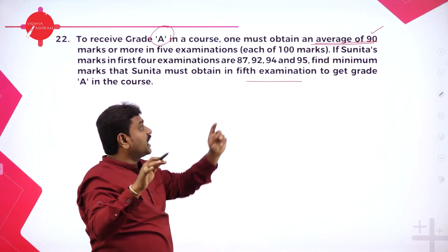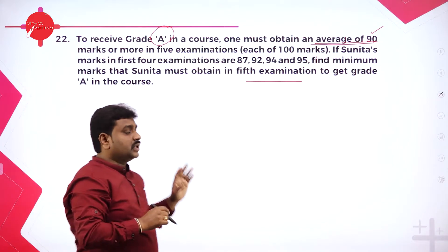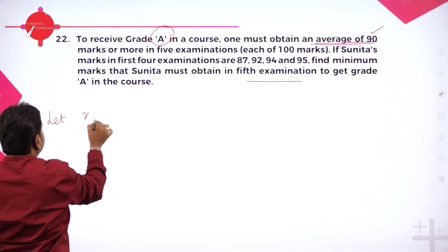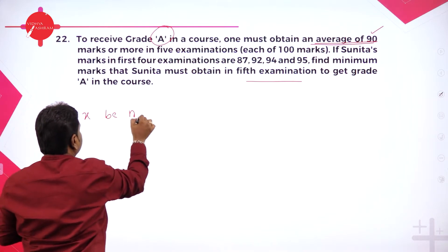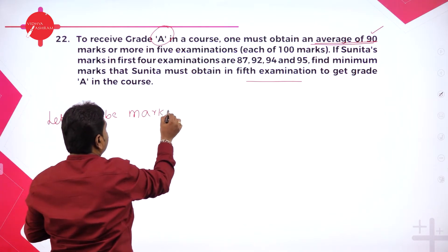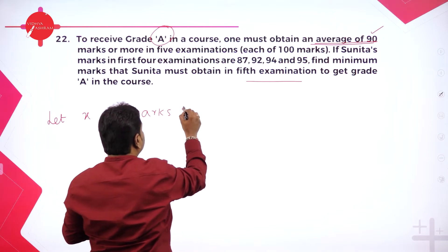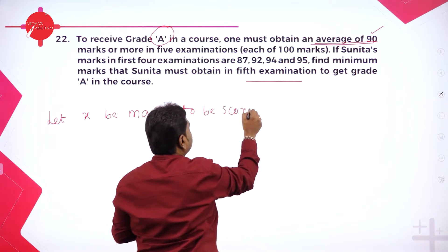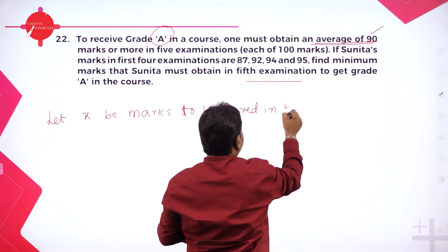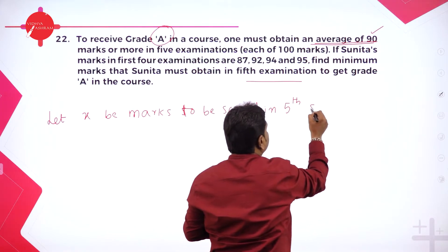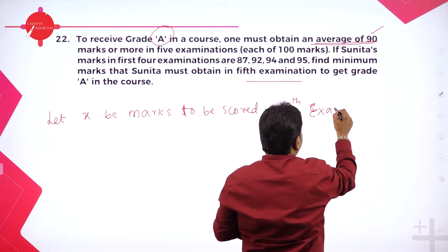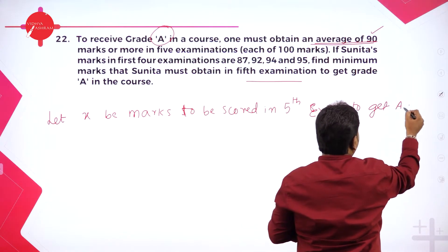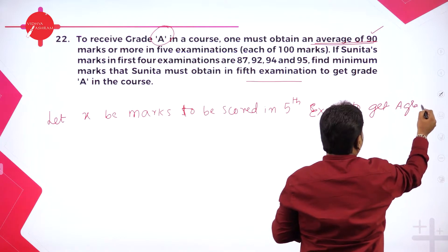To get A grade means to get average 90 or more. They are asking for 5th exam marks. So assume: let x be the marks scored in the 5th exam — marks to be scored in the 5th exam to get A grade. A grade means to get an average of 90.